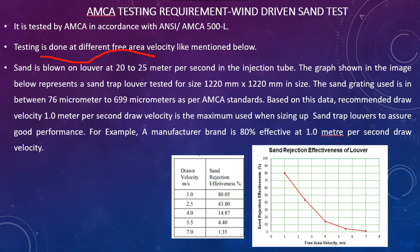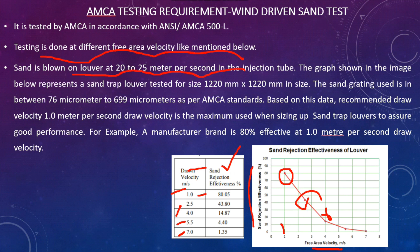The testing is done at different free area velocities: 1 m/s, 2.5 m/s, 4 m/s, 5.5 m/s, and 7 m/s. Based on the draw velocity, the sand rejection effectiveness is plotted on a graph — X-axis is free area velocity and Y-axis is sand rejection effectiveness. For example, at 1 m/s you can see how much sand rejection effectiveness is achieved, and similarly at 2.5, 4, and 5.5 m/s. The sand is blown onto the louver at 20 to 25 m/s in the injection setup.